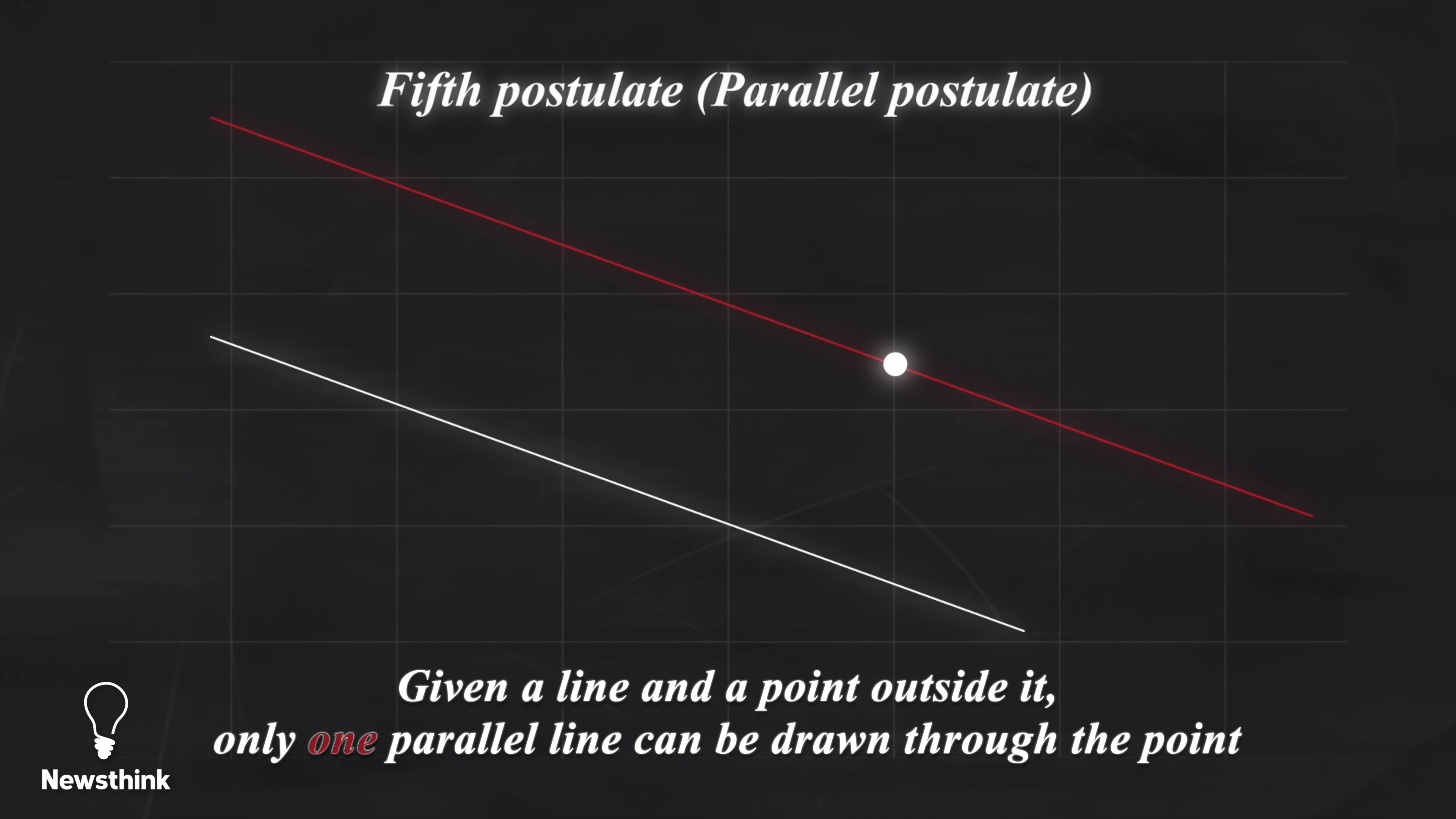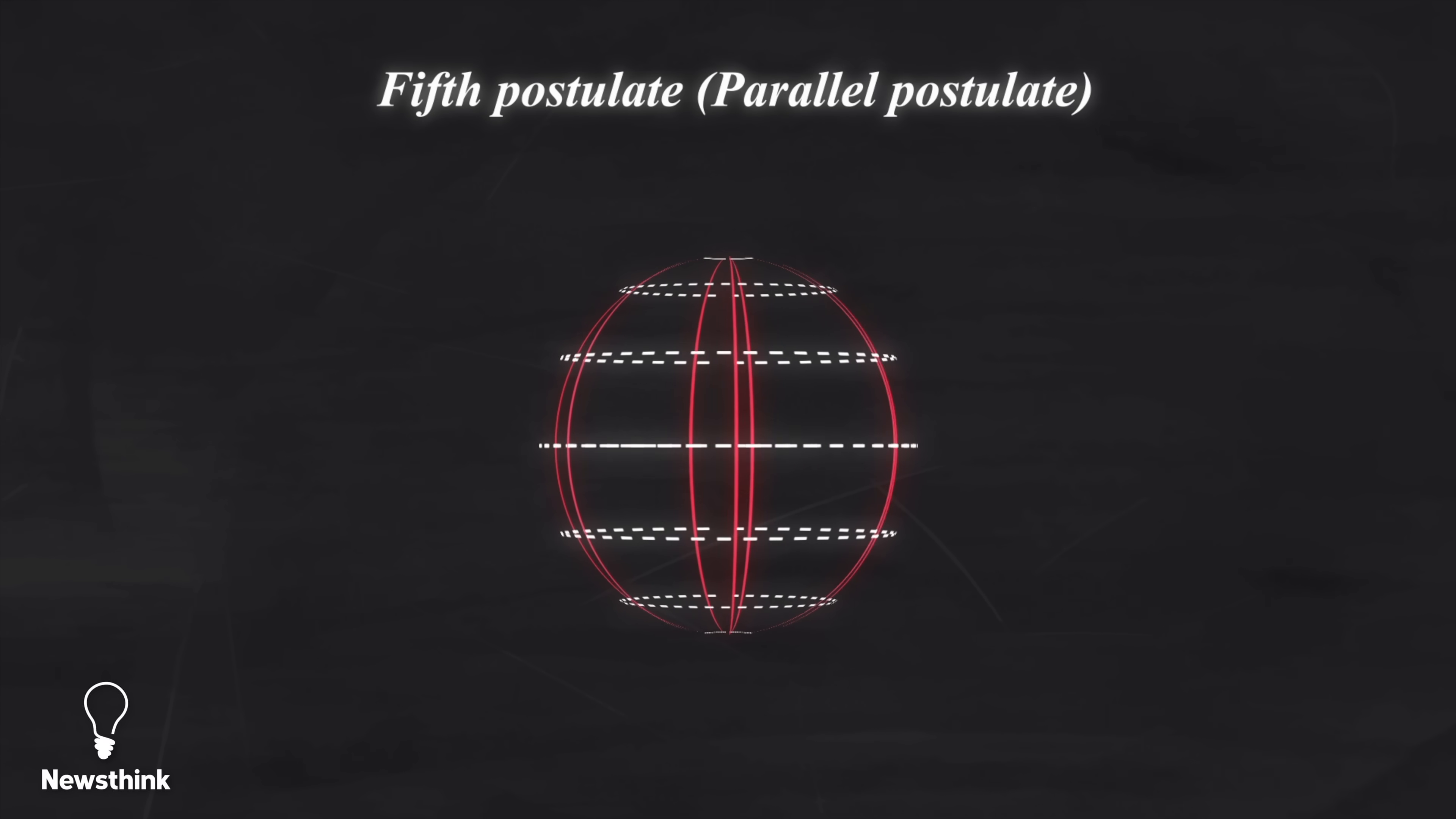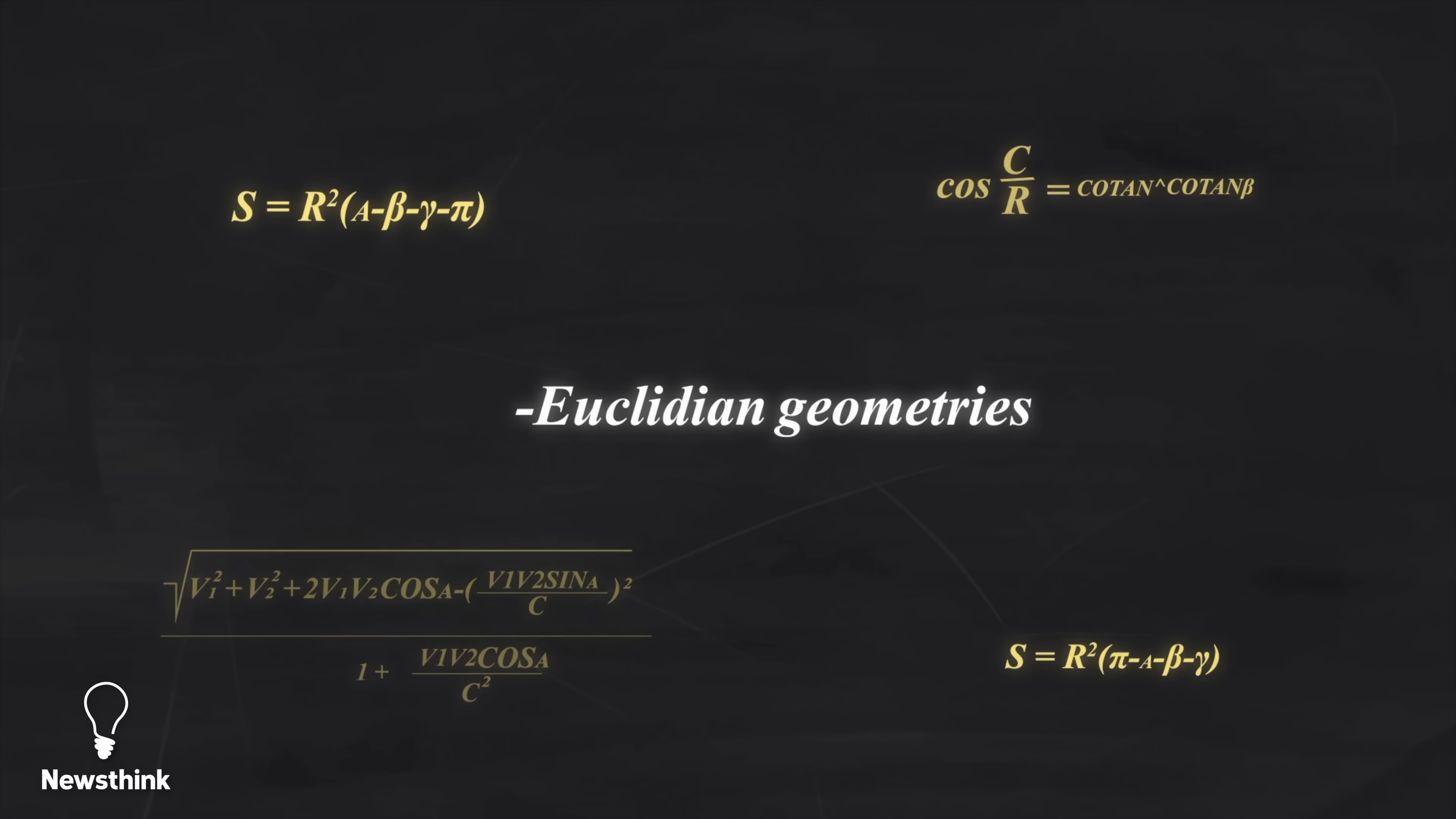Carl realized this didn't hold true on curved surfaces. For example, on Earth, lines of longitude, in red, are not parallel because they converge at the north and south poles, even though they appear parallel near the equator. This realization transformed our understanding of space and led to the development of entirely new frameworks known as non-Euclidean geometries.